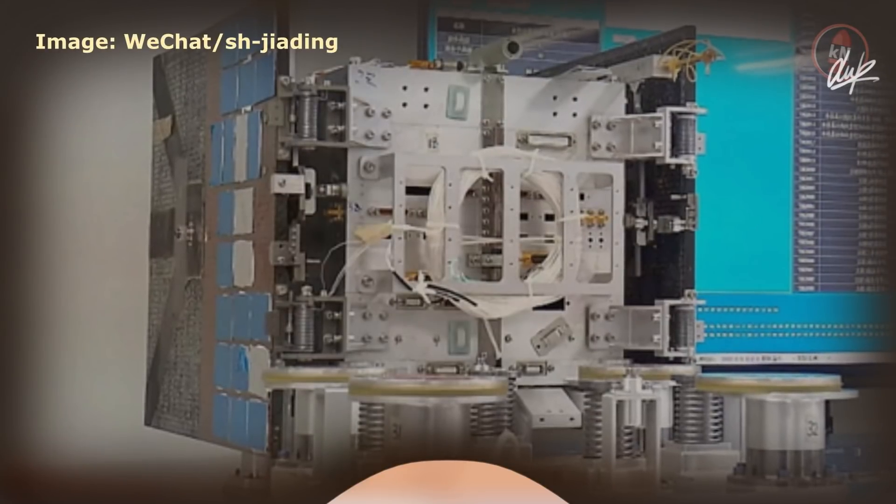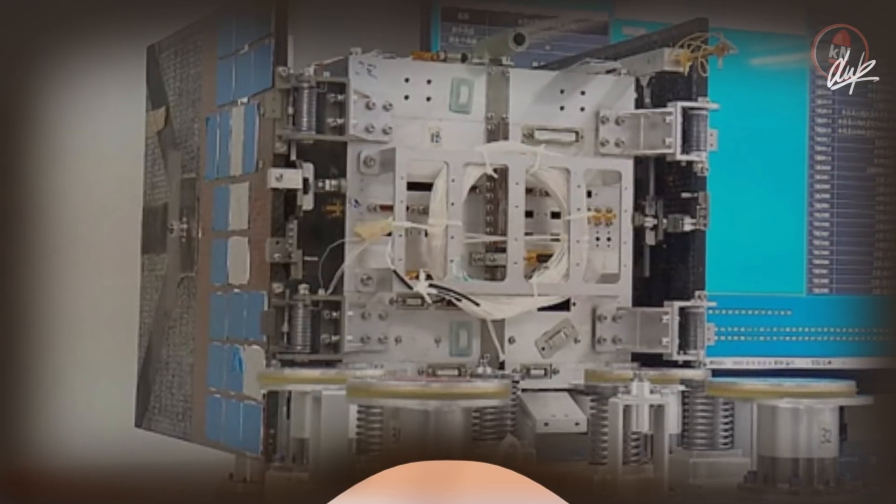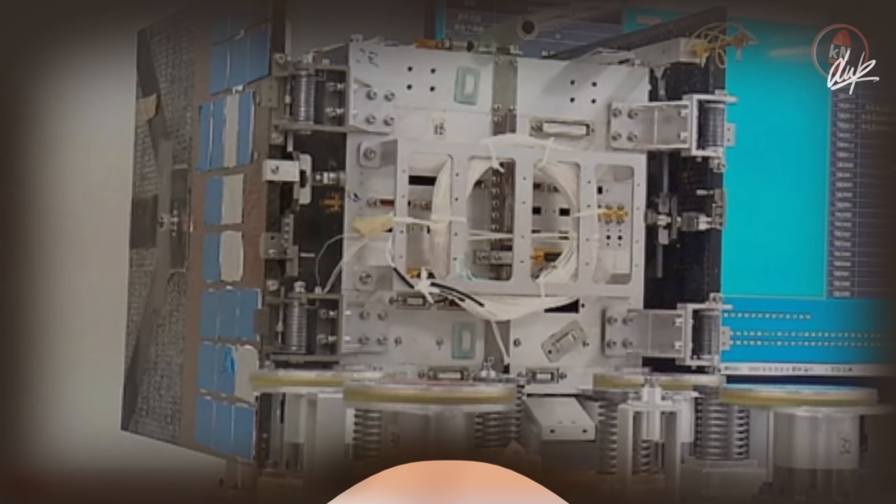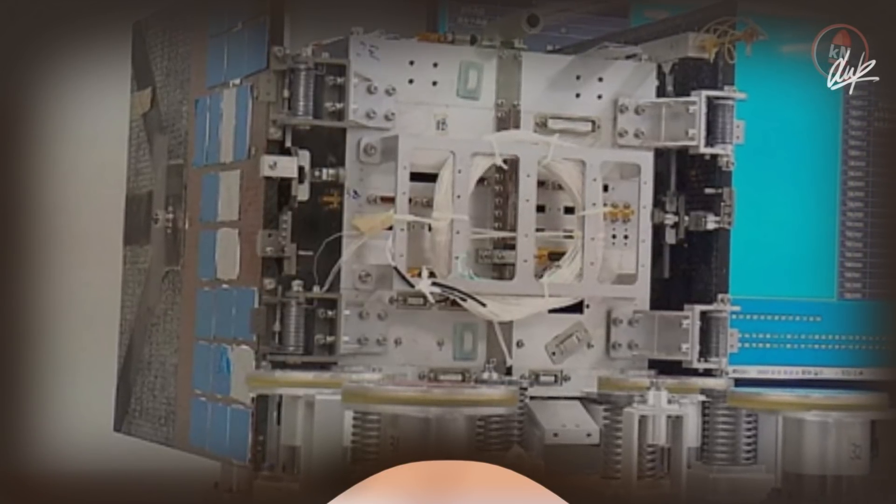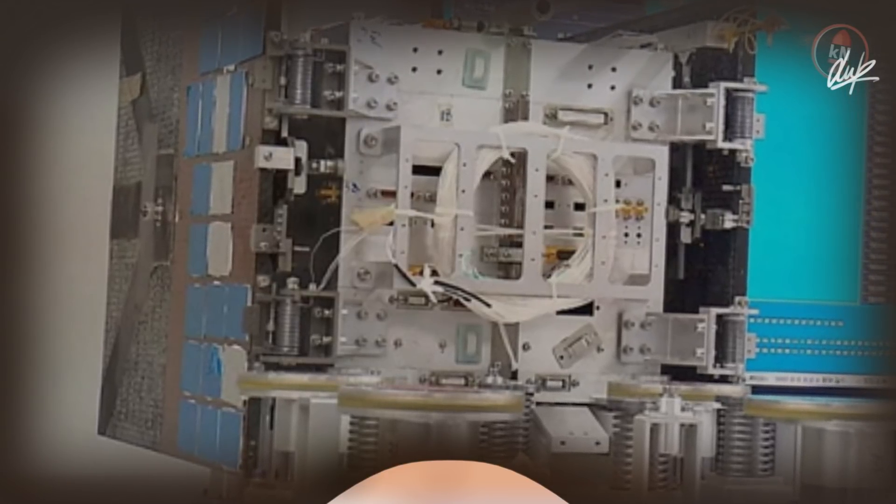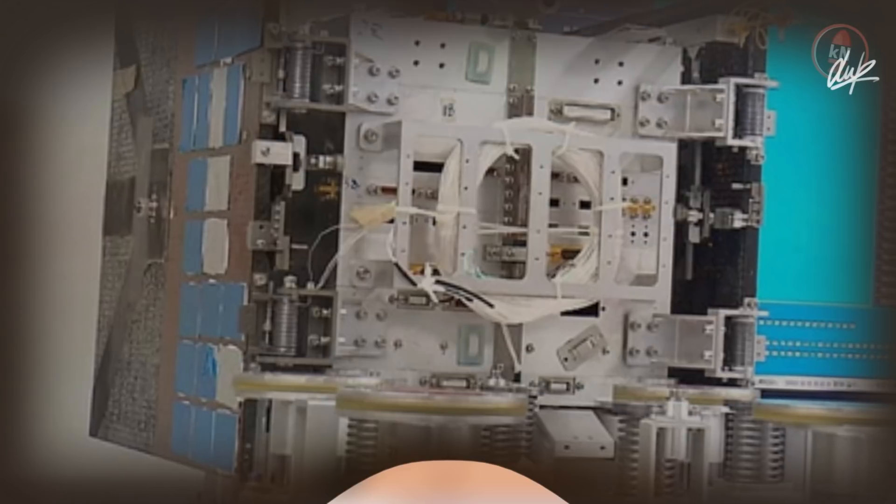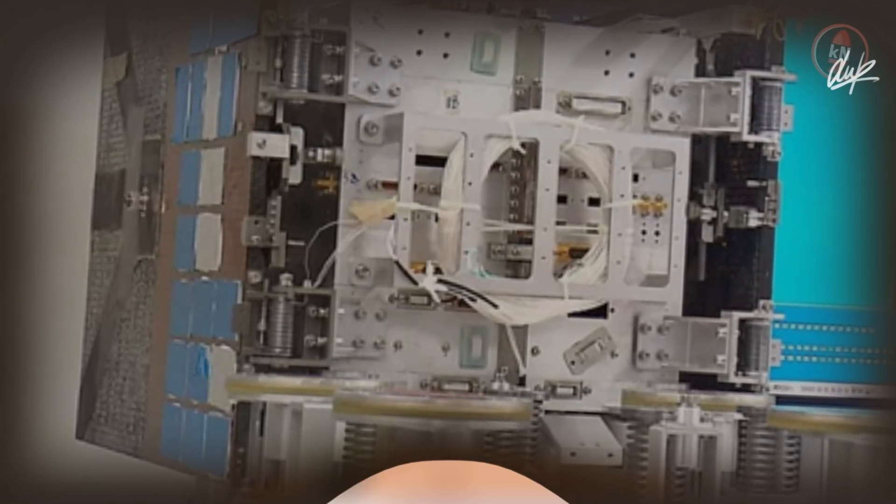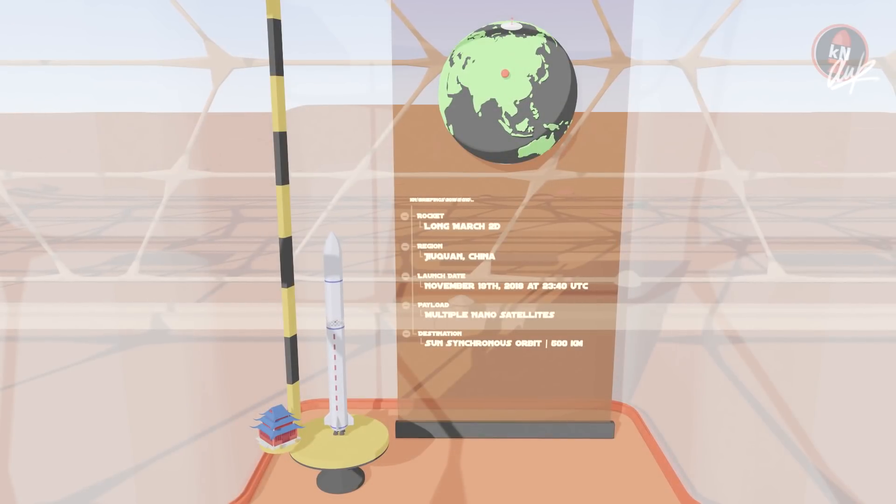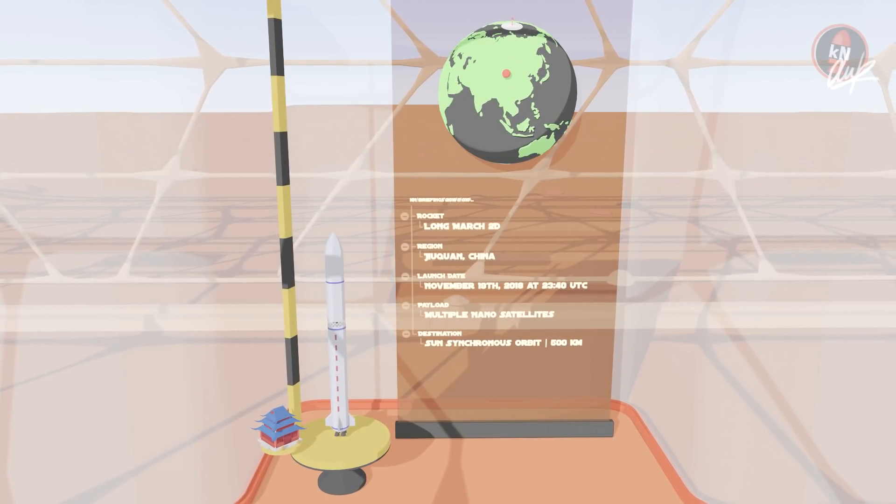It is the first in what is going to be a commercial communication constellation in low earth orbit. Sounds familiar? Yep, some kind of Chinese Starlink. I just hope they are in contact with other companies that plan to do the same because I see a lot of conflict potential especially since China is known to not really like the idea of an internet they have absolutely no control over. I'll keep you updated on how that will develop.